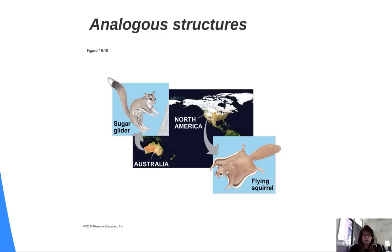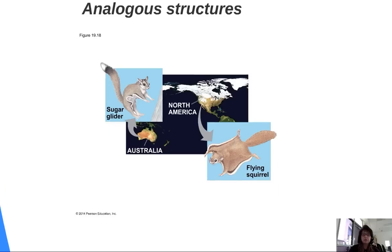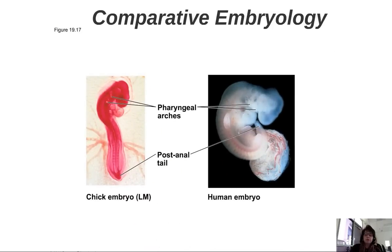The flying squirrel is a North American species and the sugar glider is actually a marsupial — they may look the same and do the same thing, but they did not derive that trait from a common ancestor. Another key piece of evidence is comparative embryology: looking at how embryos develop, the human embryo has pharyngeal slits or arches, and so does a chick embryo. Humans also have a tail that disappears, and so does the chick. At the right developmental stages, you can see remnants of genes that used to express these structures before different species diverged.